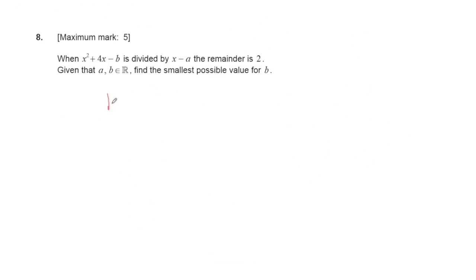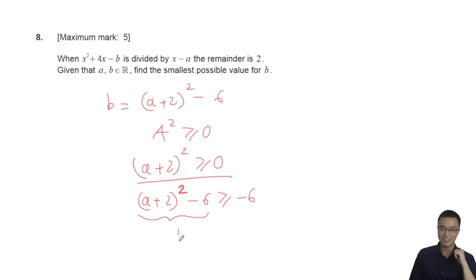Since any square is greater than or equal to zero, (a + 2)² ≥ 0. Therefore, (a + 2)² - 6 ≥ -6, which means b ≥ -6.